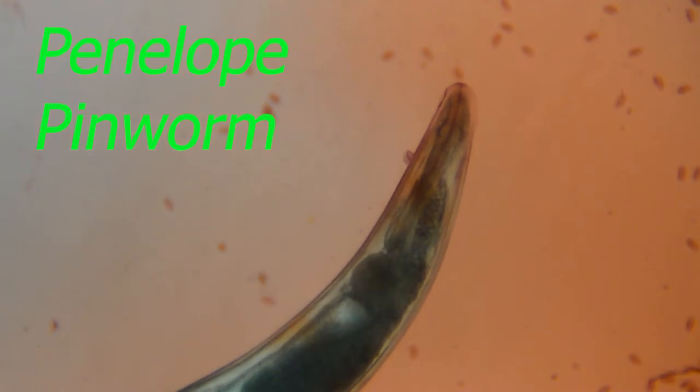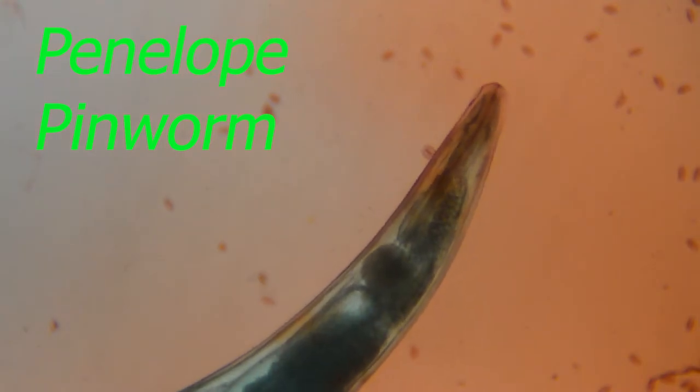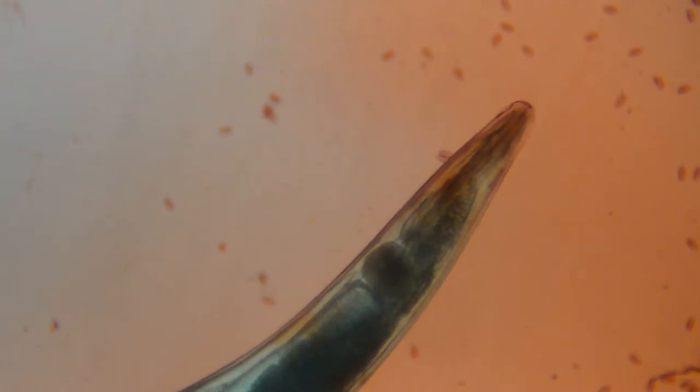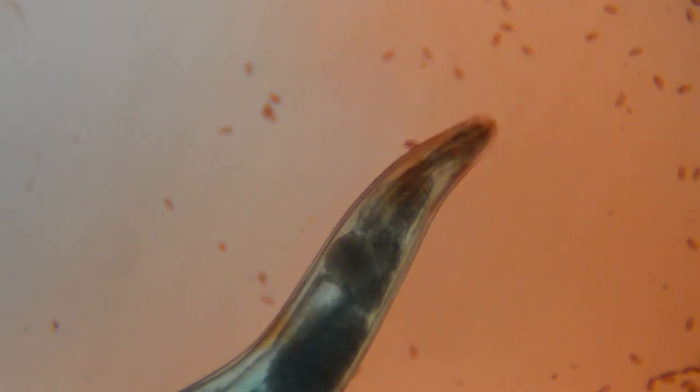This is the story of Penelope pinworm. Penelope pinworm is a roundworm that lives in the digestive system of people. Starting at the head region, she almost looks like a small transparent snake.